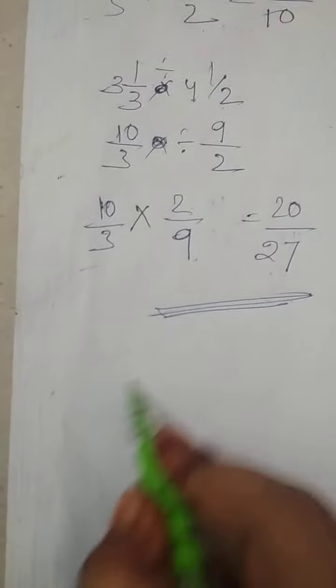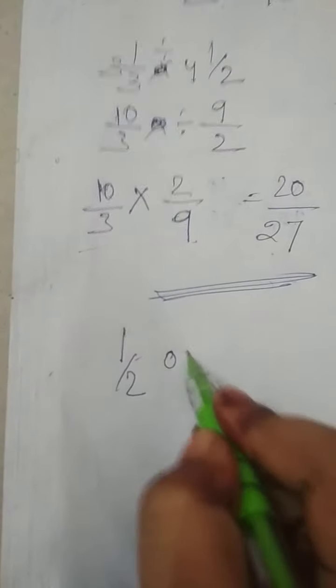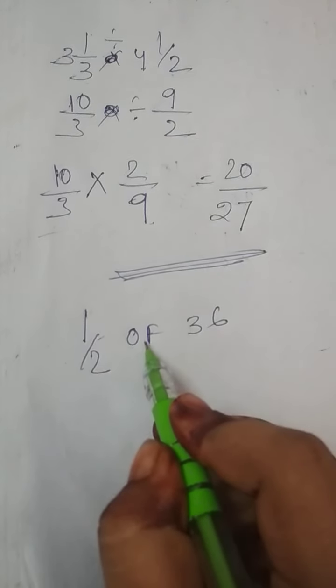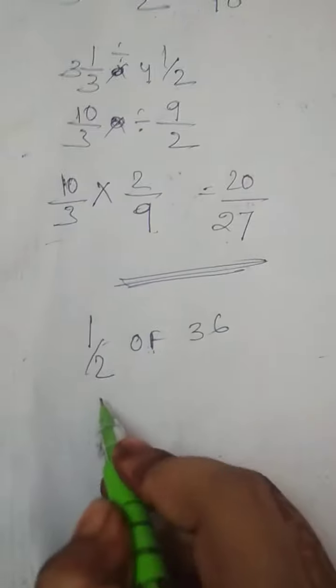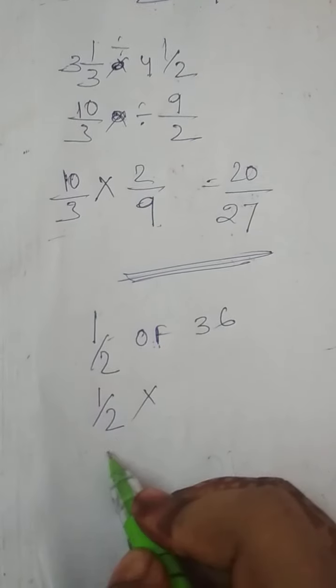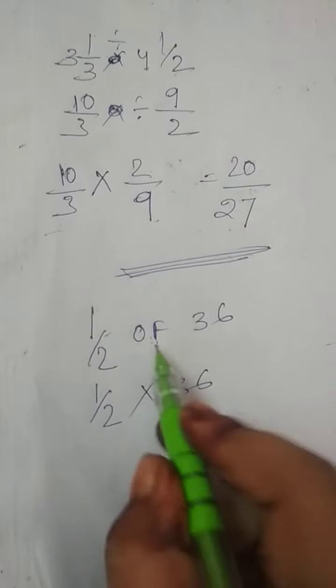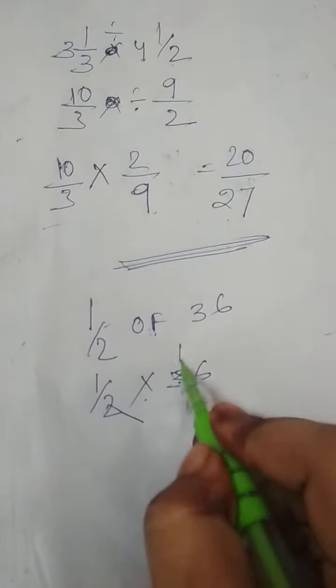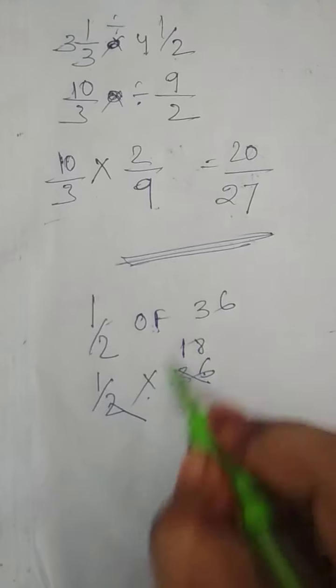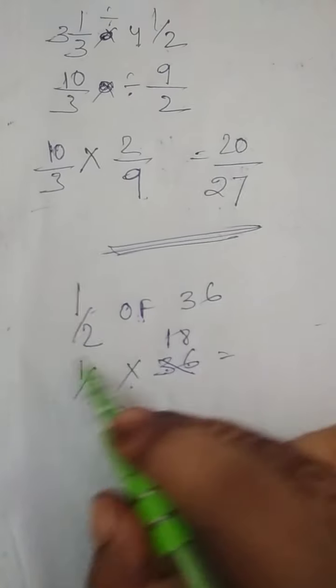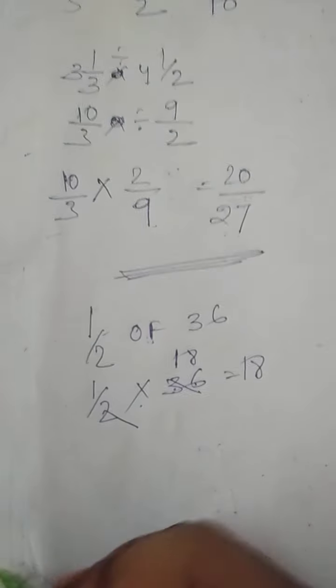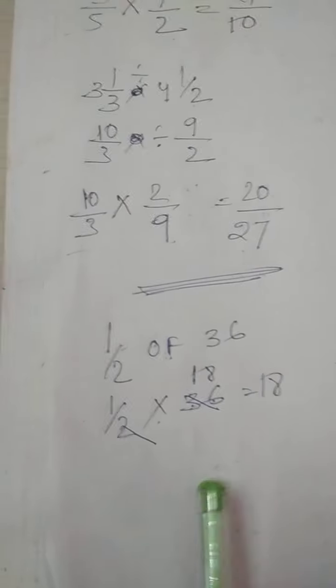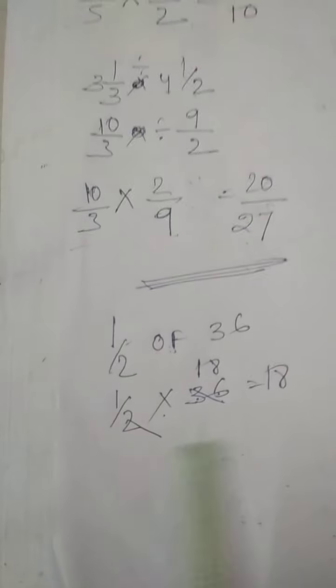'Of' means multiply. If the question is given like: 1 by 2 of 36, what you have to do — just in the place of 'of' you put 'into' (multiply). Then it will cancel: 2 ones are 2, 2 eights are 16, 18 ones are 18. If the question is given like this, you can do it with this process. Got it?